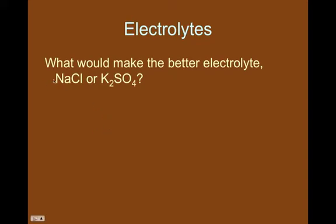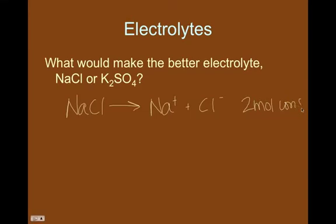Well, you've got to figure out how many ions each of these is going to dissociate into. So sodium chloride, when you put it into water, is going to ionize into a sodium ion and a chlorine ion. So this is going to have two moles of ions per mole of salt.